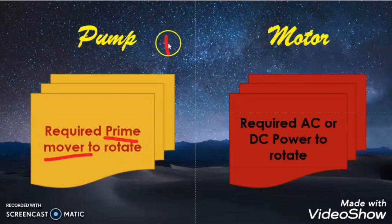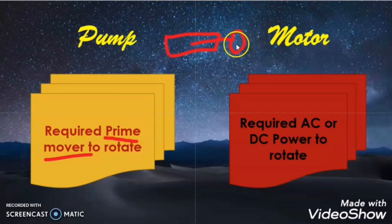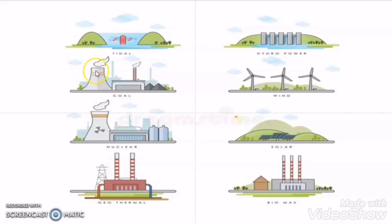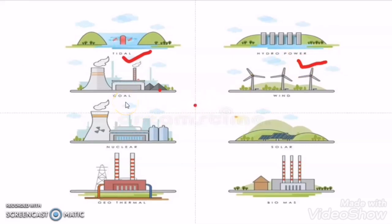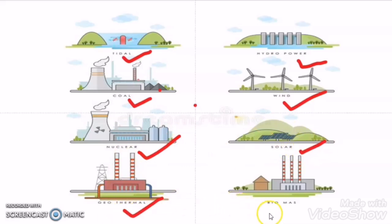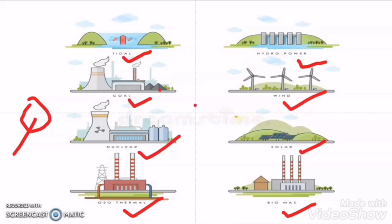In the case of a generator, the generator gets mechanical energy from the turbine, and the turbine gets mechanical energy from natural sources. For example, the turbine gets mechanical energy from tides, from hydropower, from steam which gets its energy from coal, from wind, from nuclear sources, from solar, from geothermal, and from biomass combustion. So the turbine rotates by getting energy from natural sources.